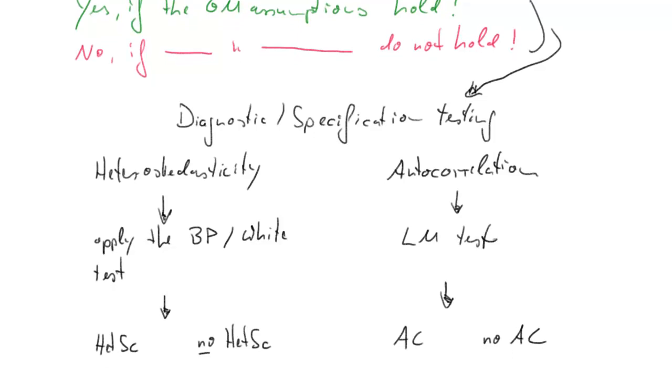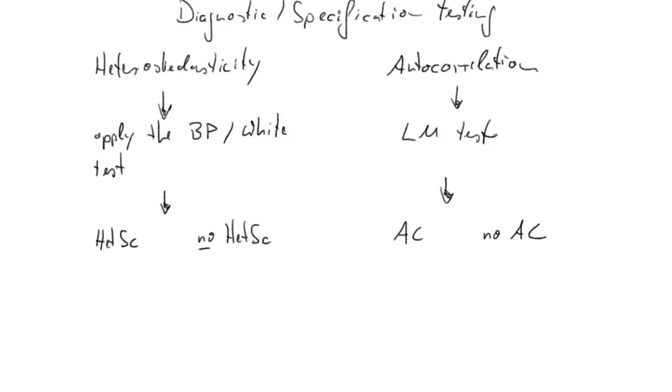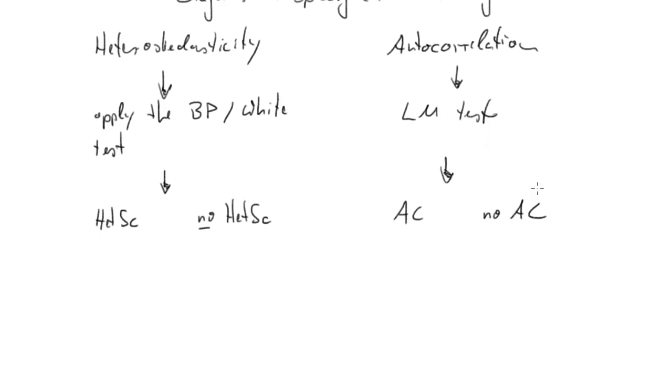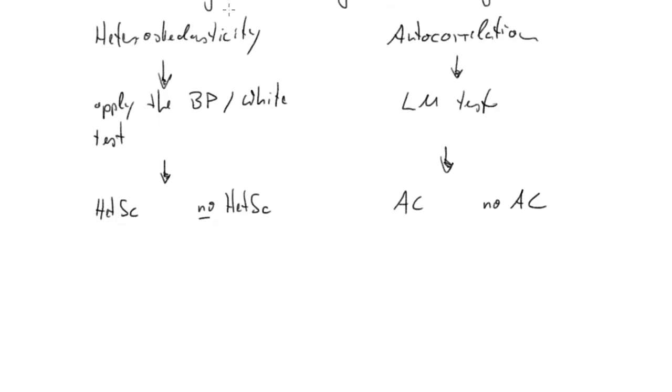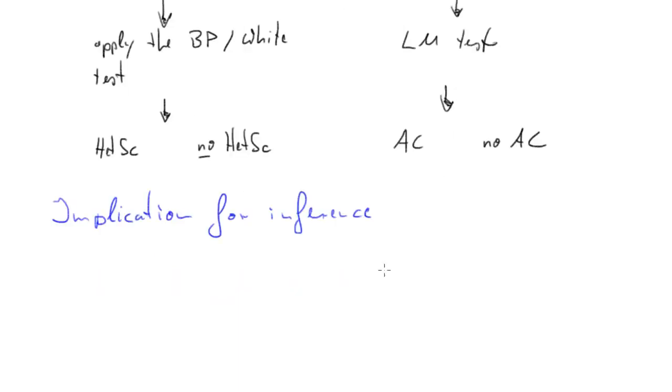The question then remains, under what situation can we use this, or what consequence does any of these decisions have for inference? What does that mean for inference? We'll concentrate on inference on one parameter only. If we have a hypothesis on one parameter, what we want to calculate is a t-test.